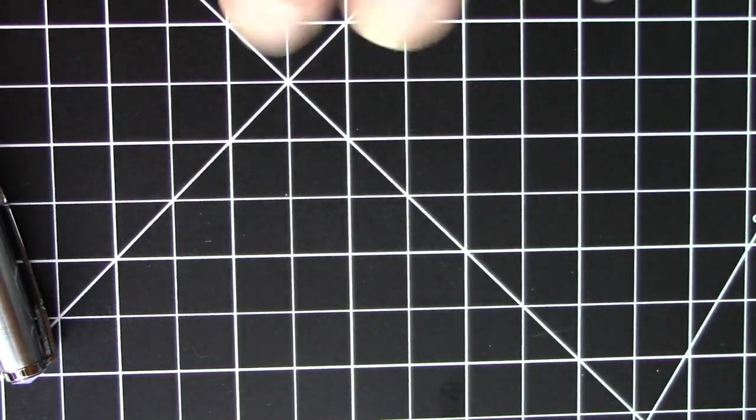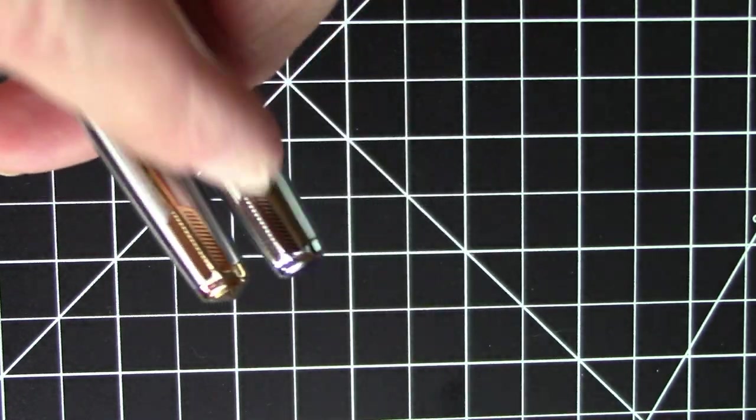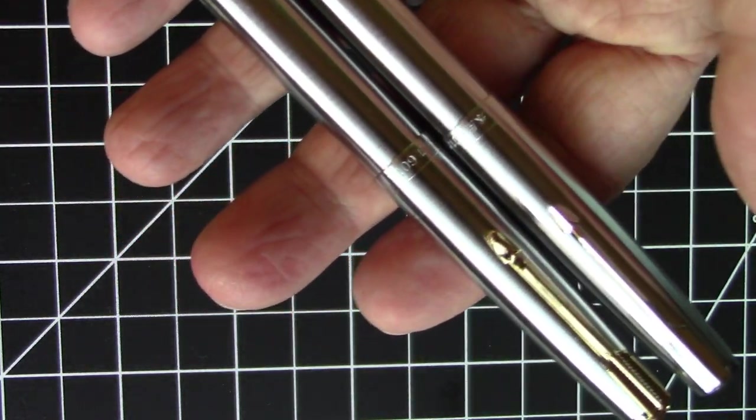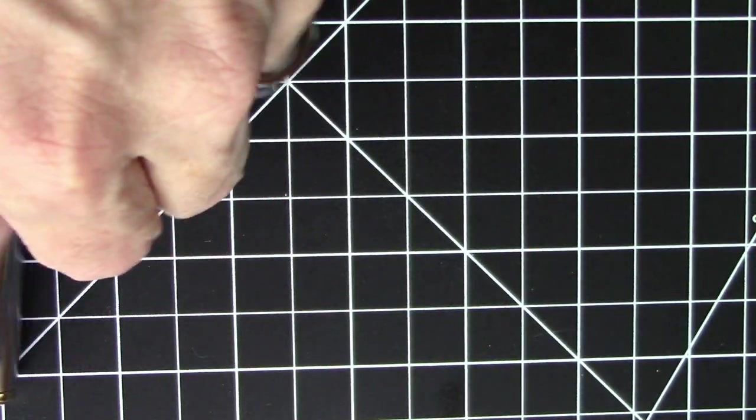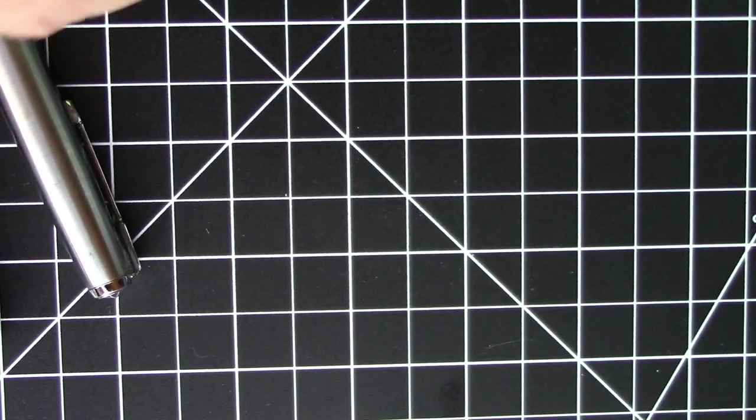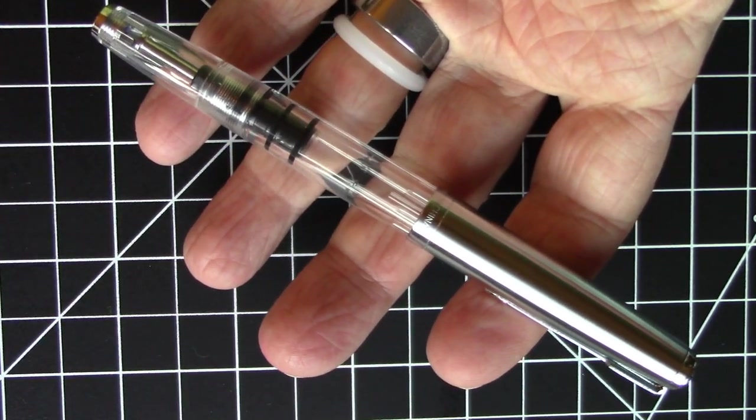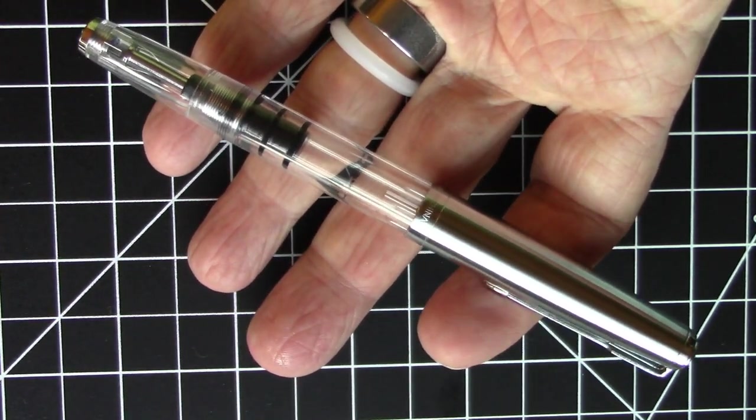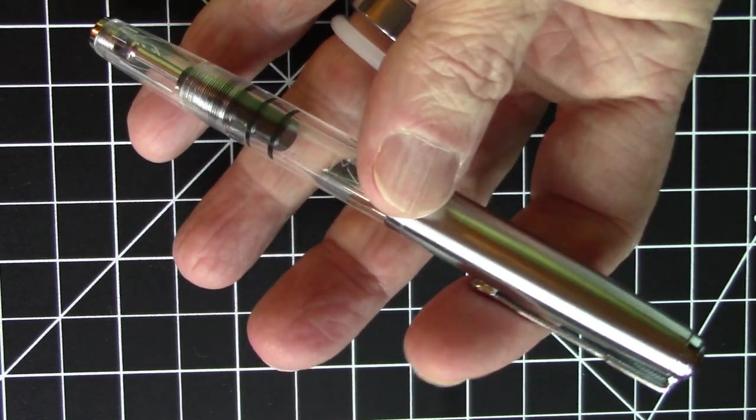They also came out with what I really like is these flighter versions, both in the all-chrome and the chrome with the gold trim. Really, really nice. I really like these quite a bit. And they also came out with this demonstrator version, which is what we're going to be showing you folks today because it's a demonstrator. So it'd be nice to show you filling it up.